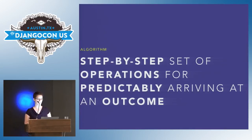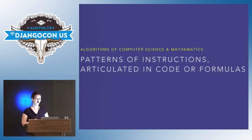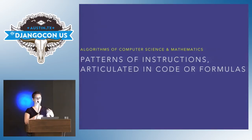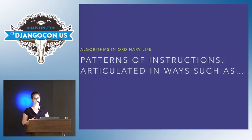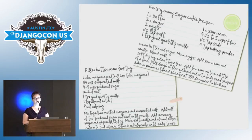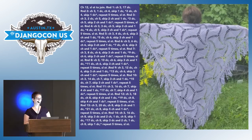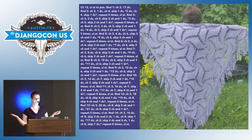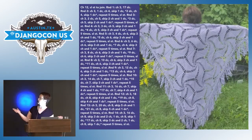Generically speaking, it's just a step-by-step set of operations for predictively arriving at a conclusion. And "predictively" is a really operative word in that. Usually when we talk about algorithms, we mean in the computer science sense, in the mathematics sense — patterns of instructions articulated in code or in formulas. But you can also think of algorithms as being part of everyday life all the time. They're just patterns of instructions articulated in other ways — such as, for instance, a recipe. Or a lovely shawl.